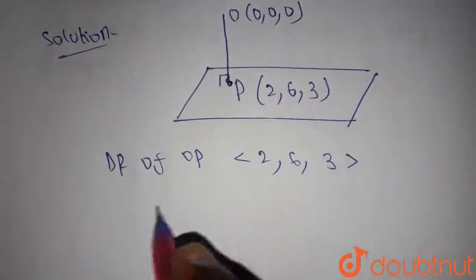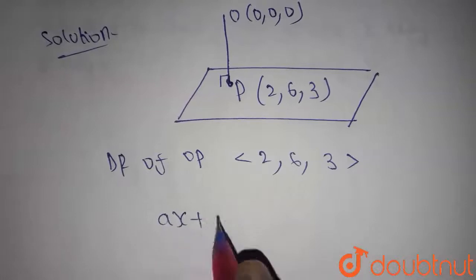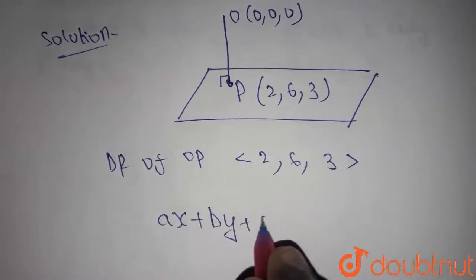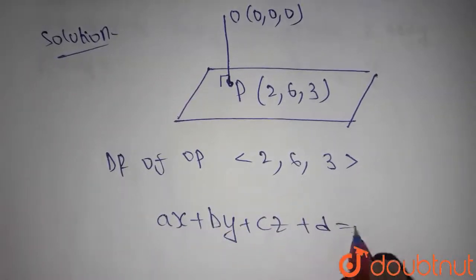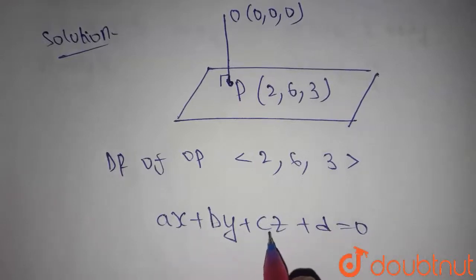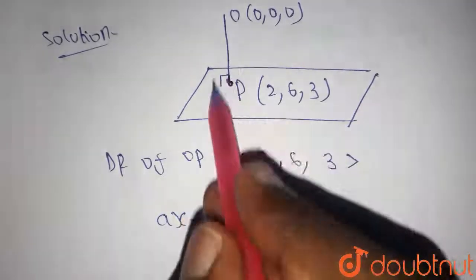Now we know the plane equation as ax plus by plus cz plus d equals 0, where a, b, c are the direction ratios of normal.